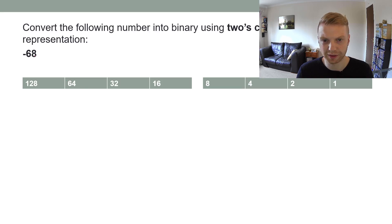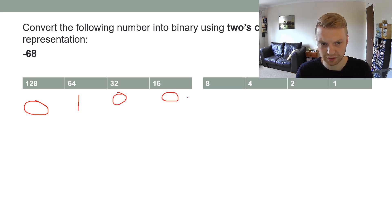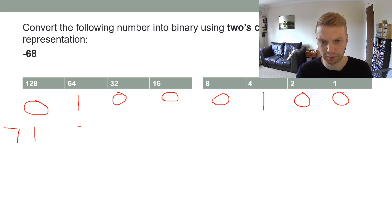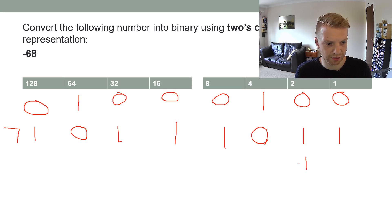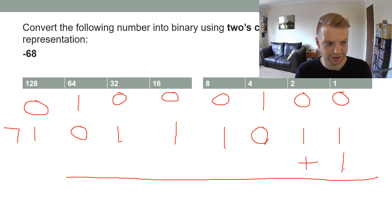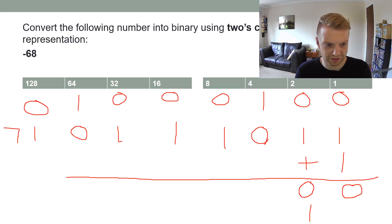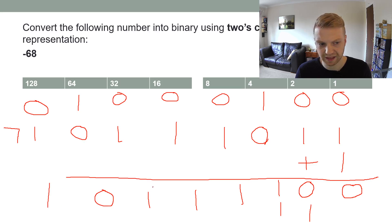Now an even number: negative 68. Step 1: 64 fits, leaving 4, so you get that binary number. Step 2: flip every bit. Step 3: add 1 — but here 1 plus 1 can't be 2 in binary, so you write 0 and carry a 1. Then 1 plus 1 again — write 0 and carry again. Then 0 plus 1 is 1 and the rest stays the same. That is negative 68 in two's complement binary.